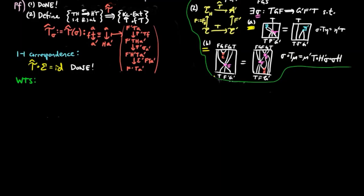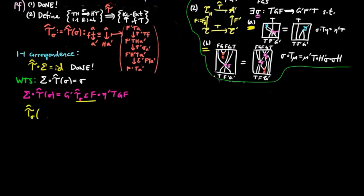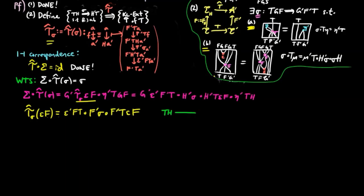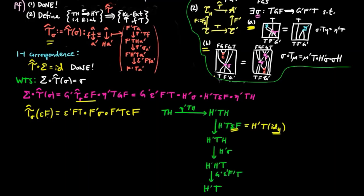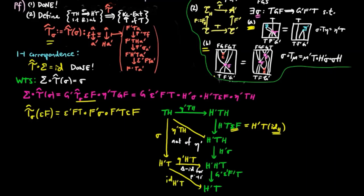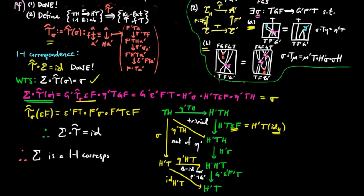Finally, we want to show that T̃ is the right inverse of Σ. We unwind the definitions and note that T̃(σ)(ε_F) equals ε'_{F'T} · F'σ · F'T·ε_F. So we get the following expression written in green in the diagram. Since ε_F equals identity_H, the upper triangle commutes. Then by naturality of η', the square below it commutes. And finally, by the triangle identity for F'G', we have the bottom triangle commuting. Therefore, we arrive back at σ, and thus Σ is a one-to-one correspondence, which finishes the proof.